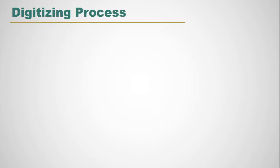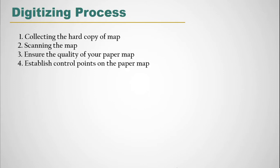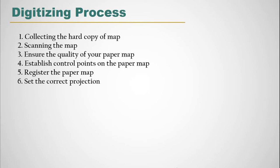Now the digitizing process. First we have to collect the hardcopy of the map which we want to digitize. Then we have to scan the map and ensure the quality of your paper map. You have to save your paper map at the time of scanning in JPEG or TIF file format. Then the next digitizing process is geo-referencing. Geo-referencing can be categorized in many points: first you have to establish control points on the paper map, then register the paper map and set the correct projection. After that enable digitizing mode and begin digitizing.